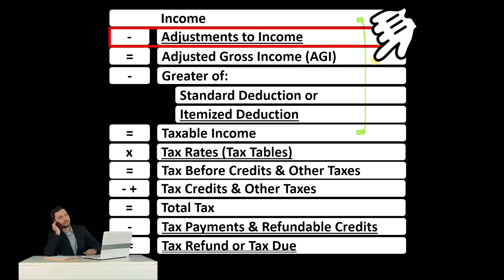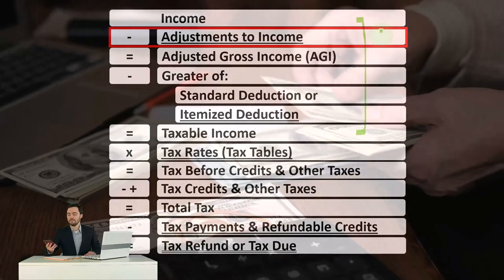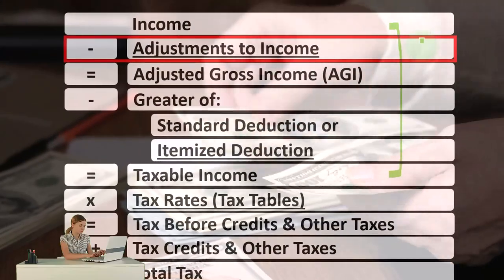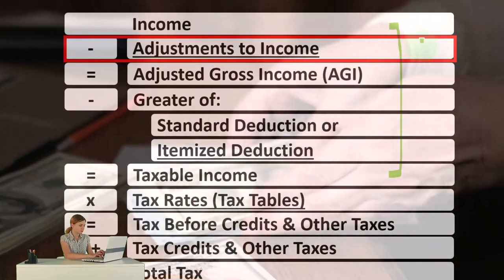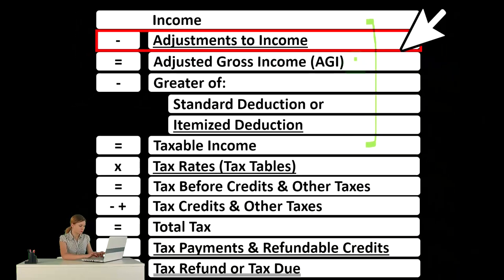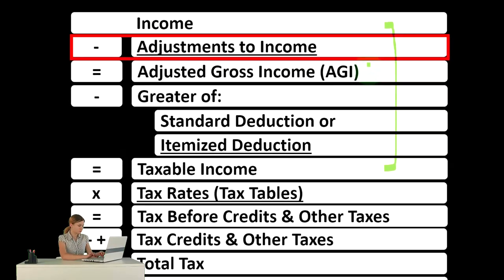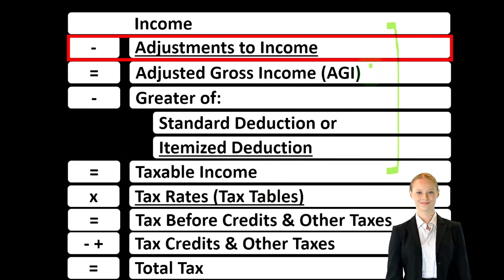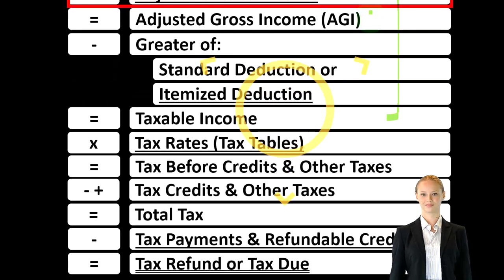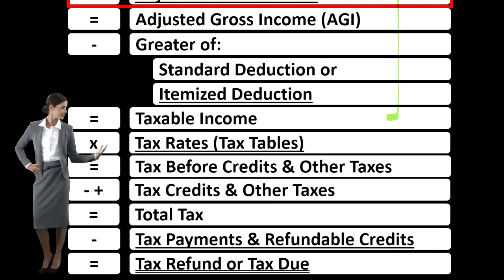You might hear it called an above-the-line deduction or a Schedule 1 deduction. Why does it say adjustment to income instead of a deduction? You could think of it as a contra income account — it's basically decreasing the income to arrive at a subtotal. The reason it's called an adjustment to income is because that subtotal is called adjusted gross income, which is an important subtotal used to calculate phase-outs on deductions and credits, usually based on this number rather than the top-line income number.